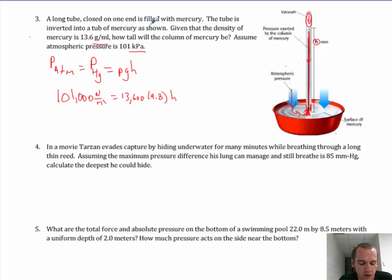Now if you do this math you're going to take 101,000 and divide that by 13,600 and then divide that by 9.8 and you end up with 0.7578 meters. This does say millimeters in my picture so I would say 757.8 millimeters and this is millimeters of mercury.